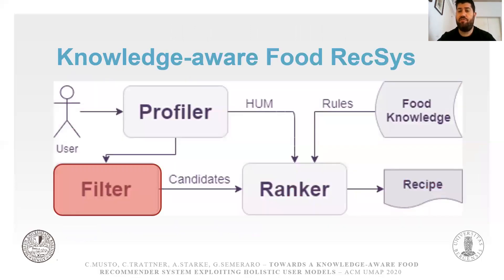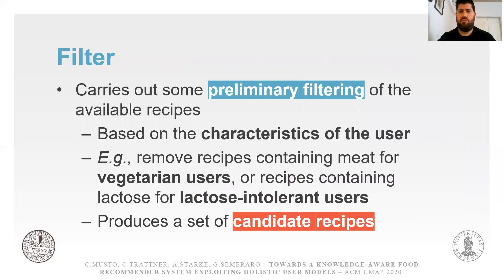Next, we have the filter component, whose goal is to carry out a preliminary filtering of the available recipes. For example, we remove recipes containing meat for vegetarian users and so on. At the end of this step, we produce a set of candidate recipes — recipes that are suitable for the user.